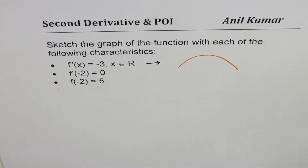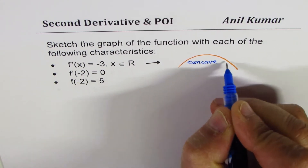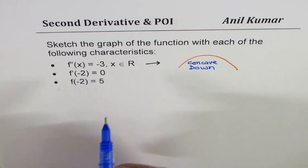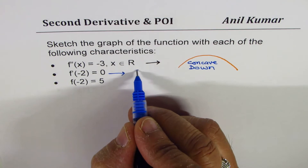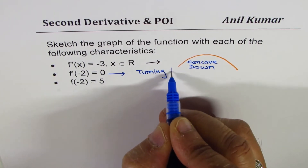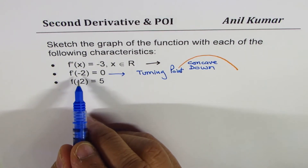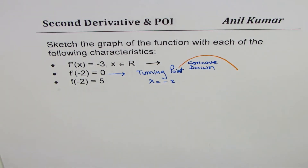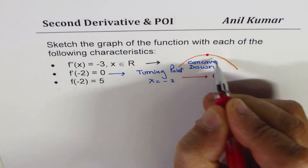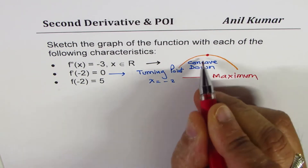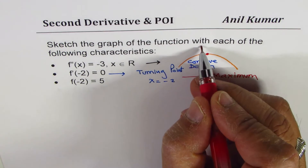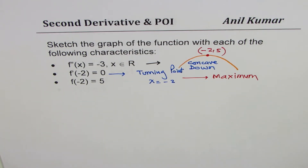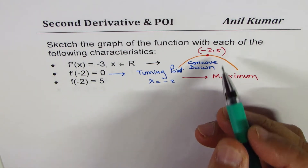The function is concave down along all real numbers. The first derivative at x = -2 is 0, which means we have a turning point at x = -2. Since the function is concave down, that turning point must be a maximum. The value at minus 2 is 5, so the maximum point is at (-2, 5). We have now fully defined the shape of our curve.